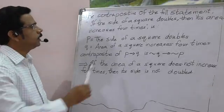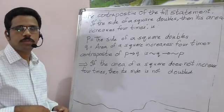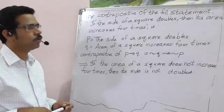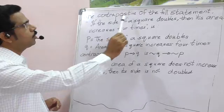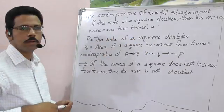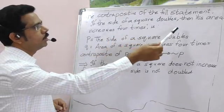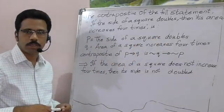Hi, this question from J-Main online exam which was conducted on April 10, 2016. The contrapositive of the following statement: If the side of a square doubles, then its area increases 4 times is what?